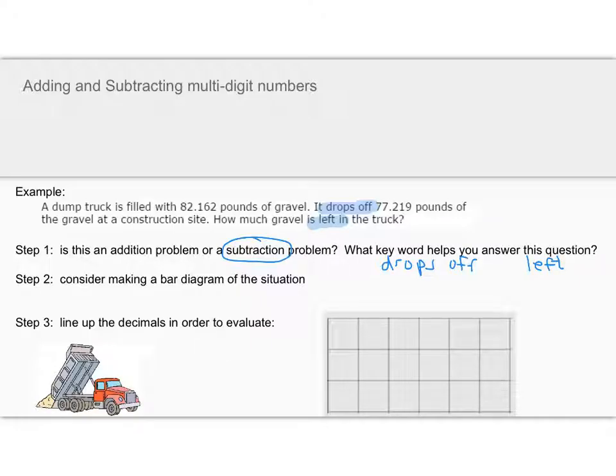A bar diagram for a subtraction problem looks a little bit different. In this case, I have this original amount, and I am dropping off, or getting rid of, some portion of that. And then there's some portion that's left over, and that's what I'm trying to find. We have this 82.162 that I'm beginning with, and I'm dropping off 77.219, and then I'm trying to find out what's left over in this box here.